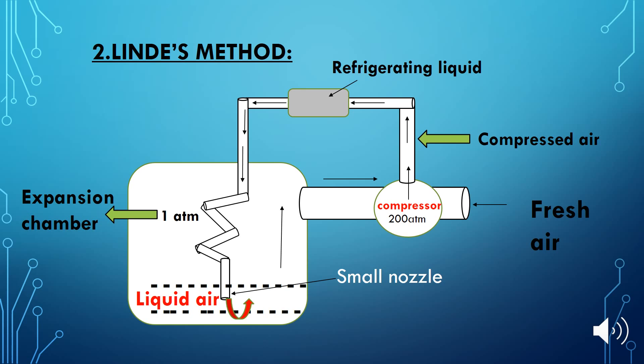The gas enters the expansion chamber where the pressure is very low, that is one atmosphere, and the gas gets cooled. By repeating this process several times, the gas changes into the liquid state.